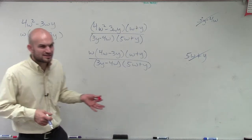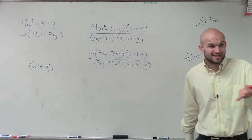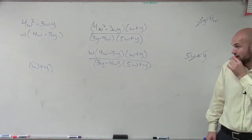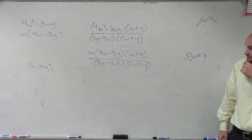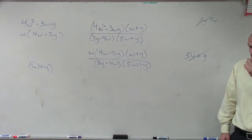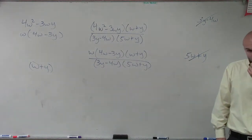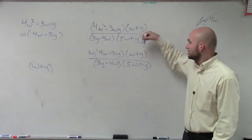But yeah, if there was going to be two terms that would divide out, does anybody know which two terms would look like they could divide out? W plus y and 5w plus y is what? No, 4w minus 3y. And what? N minus 3y negative 4w. Okay. Well, that's very close.